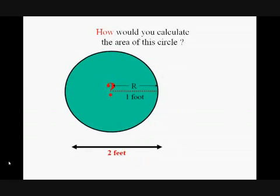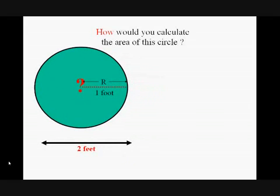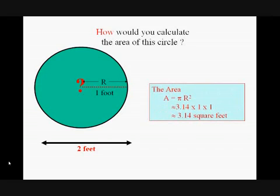The constant pi is about 3.14. So A equals pi R squared equals 3.14 times 1 times 1 equals 3.14 square feet.